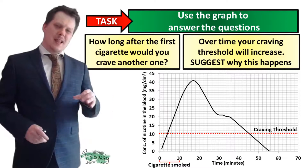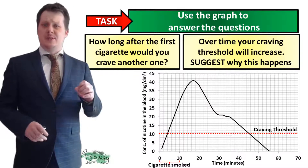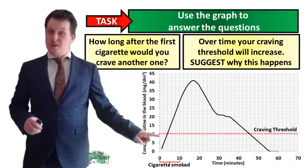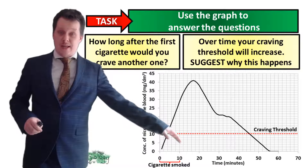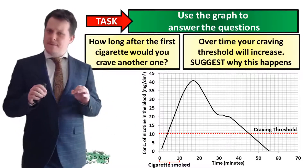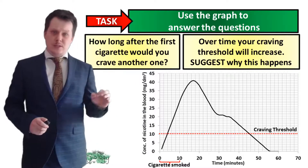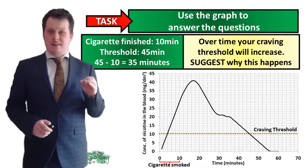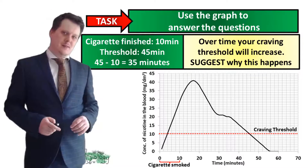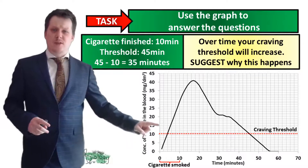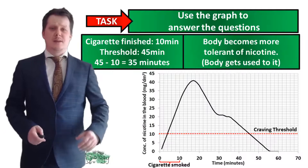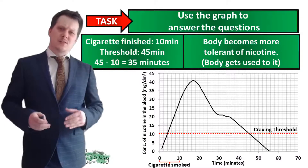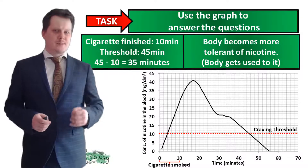The first cigarette is finished at ten minutes. If we follow the craving threshold line until the nicotine line cuts through it again, it cuts through at about 45 minutes. The difference is 45 minus 10, giving us 35 minutes until we craved another cigarette. Over time, the craving threshold increases because your body becomes more tolerant of the nicotine — or if you said the body gets used to it, that's absolutely fine.